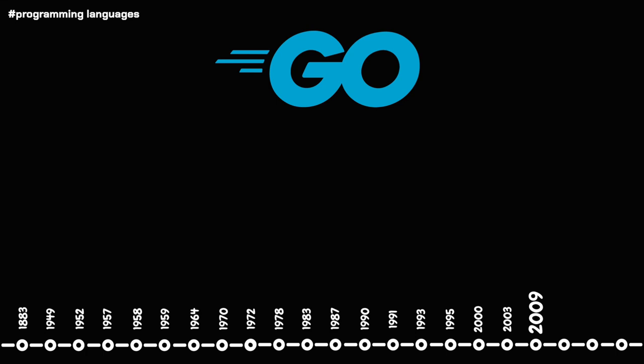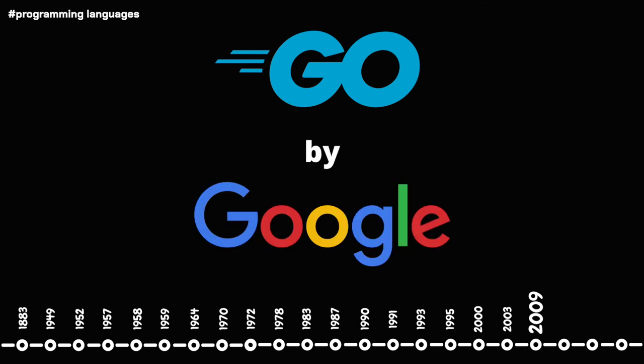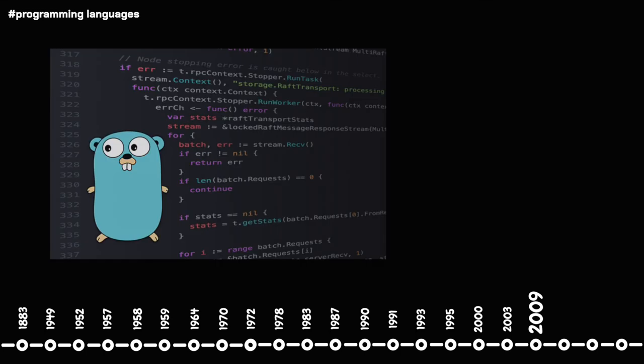In 2009, we see the emergence of Go, also known as Golang, developed by a team at Google. Go was designed to help fix problems common in Google's software systems with languages like Java and C++. In terms of syntax, Go is similar to C, but with the addition of memory safety, garbage collection, as well as some other useful features.